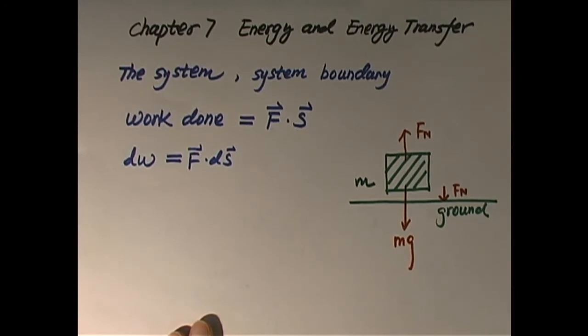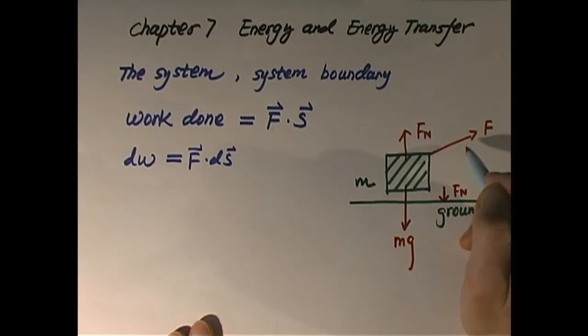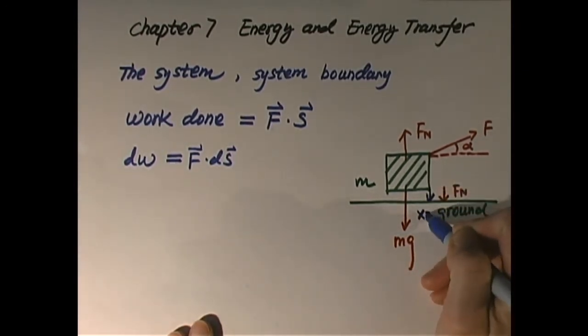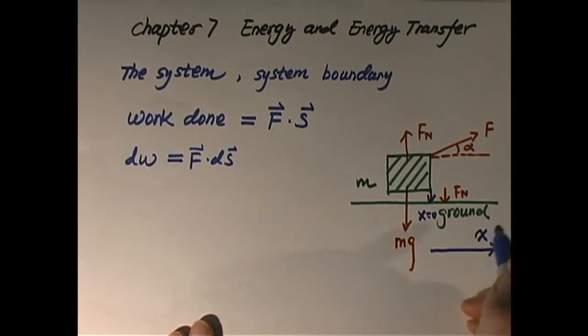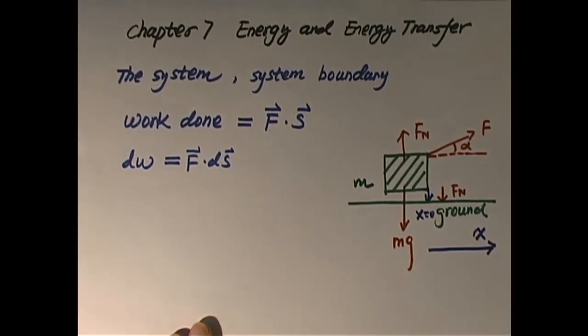Next, if there's an additional force, we can apply force F. And this F has an angle of α degrees with respect to horizontal. So if this force is large enough, if it can overcome the static friction between the block of mass m and the ground, this object will start to move on the ground towards a direction. Let's say this is x=0, then it will start to move. Let's define this as the positive x-direction. So it will have a displacement along the positive x-axis.